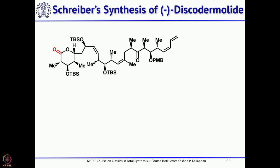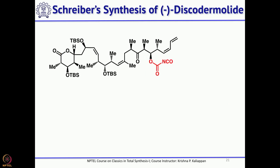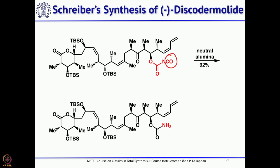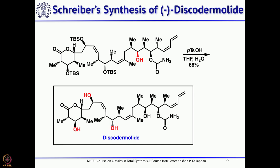With the left-hand side, right-hand side, and methyl group all complete, only one more functional group remains: reducing the ketone to give the alcohol. Before reducing the ketone, PMB was first removed to give the secondary alcohol, which was treated with chloroisocyanate to form an ester (OCO-NCO). Simple hydrolysis with neutral alumina converted the isocyanate to the carbamate (OCO-NH2), and sodium borohydride reduction gave the corresponding alcohol. Finally, all TBS groups were removed with para-toluenesulfonic acid.